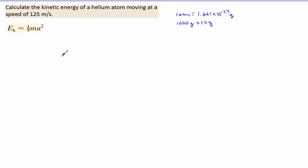Most of this chapter is about different ways to calculate energy, and we have different kinds of energies. The first kind discussed in Chapter 5 is kinetic energy, which — kinetic meaning motion — is the energy associated with movement. The equation for kinetic energy is E subscript k equals one-half m u squared, where m is the mass and u is the velocity. If you've taken a physics class, you might have seen this written as one-half m v squared, where v is used instead of u. It's the same equation used the same way.